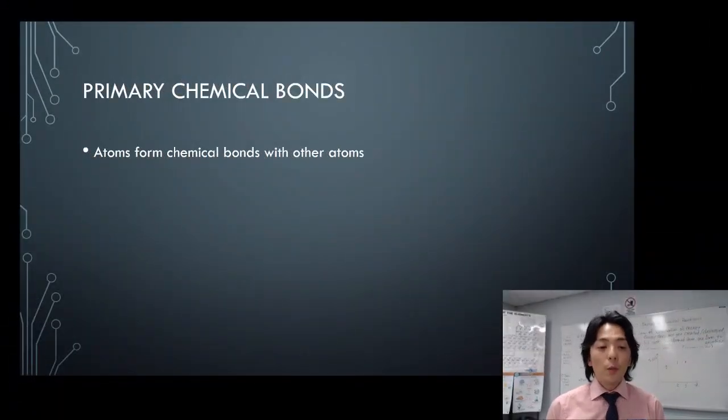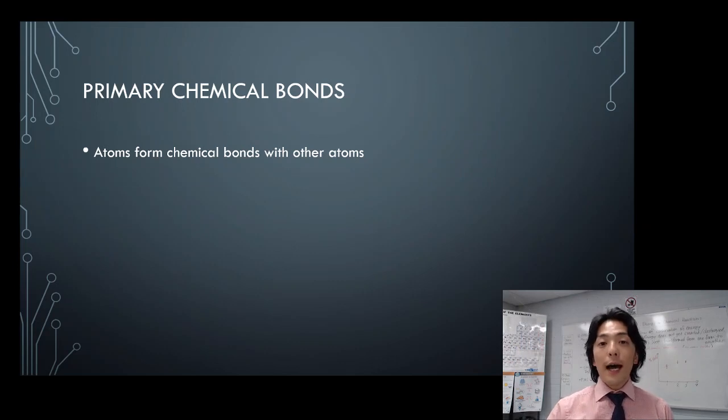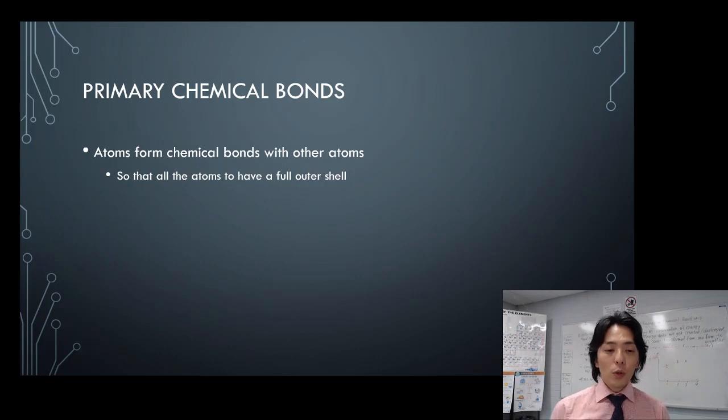Atoms form chemical bonds with other atoms. Why do they do that? So that all the atoms have a full valence shell.